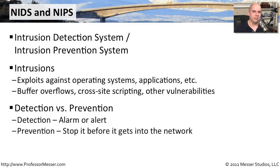There are two types of systems you'll run into: an intrusion detection system and an intrusion prevention system. The intrusion detection system does exactly what the name sounds like — it detects, identifies, and logs. It lets you know that someone was trying to take advantage of a vulnerability in an operating system or application, but it doesn't stop anything. That's why intrusion prevention systems were created.